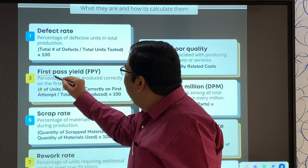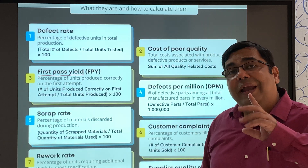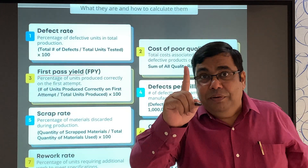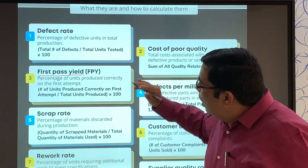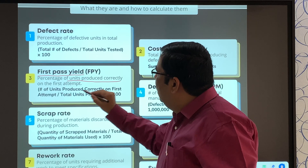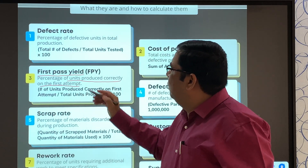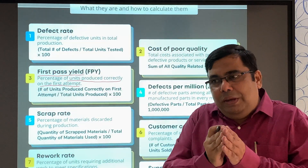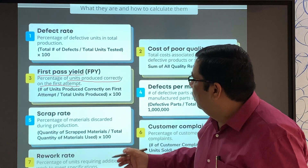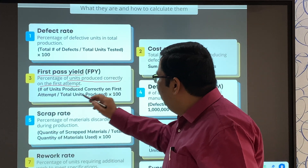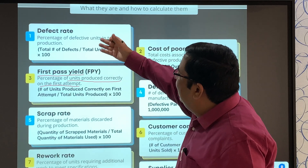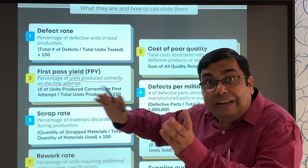The third is first pass yield. Remember that the basic GMP requirement is 'first time right.' First pass yield measures units produced correctly on the first attempt, divided by total units produced, multiplied by 100. The defect rate and first pass yield are somewhat interlinked.